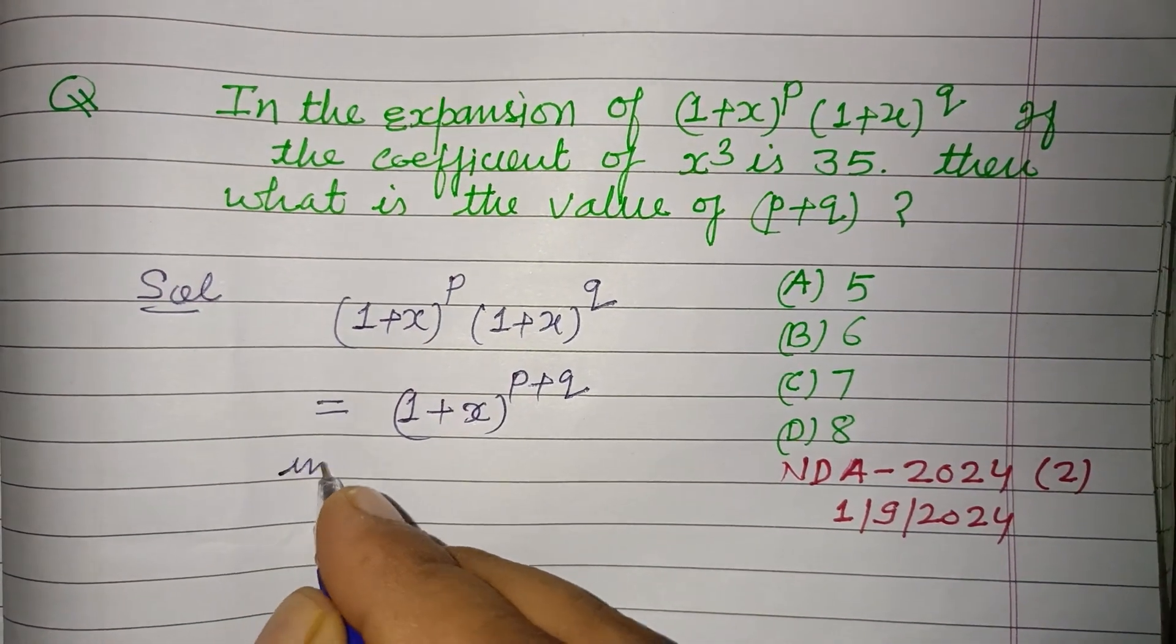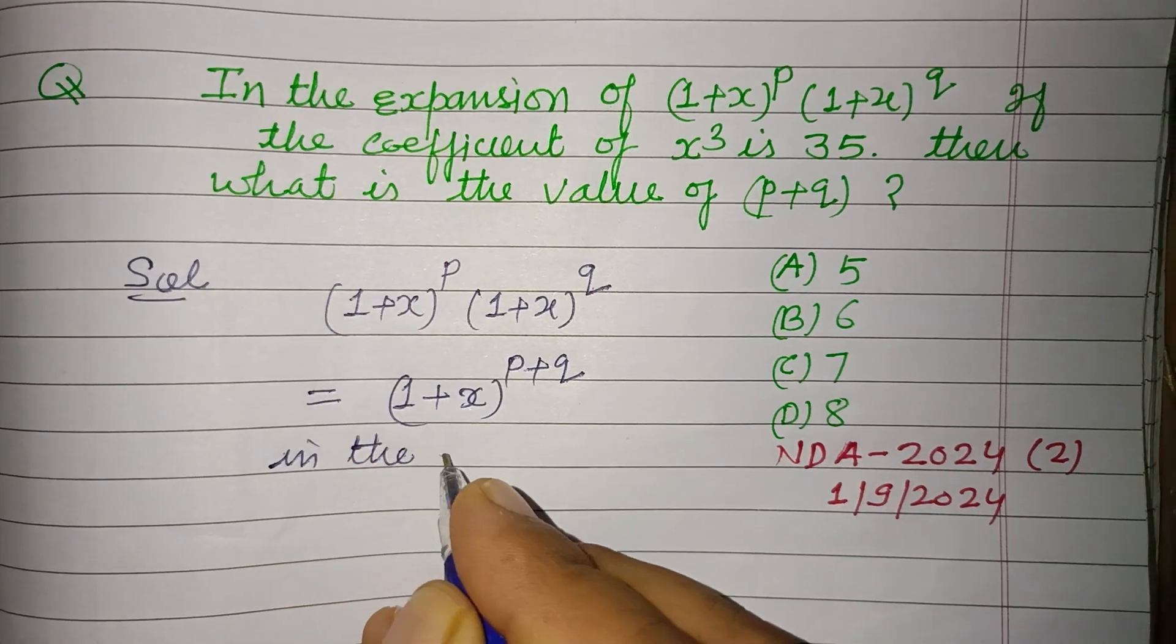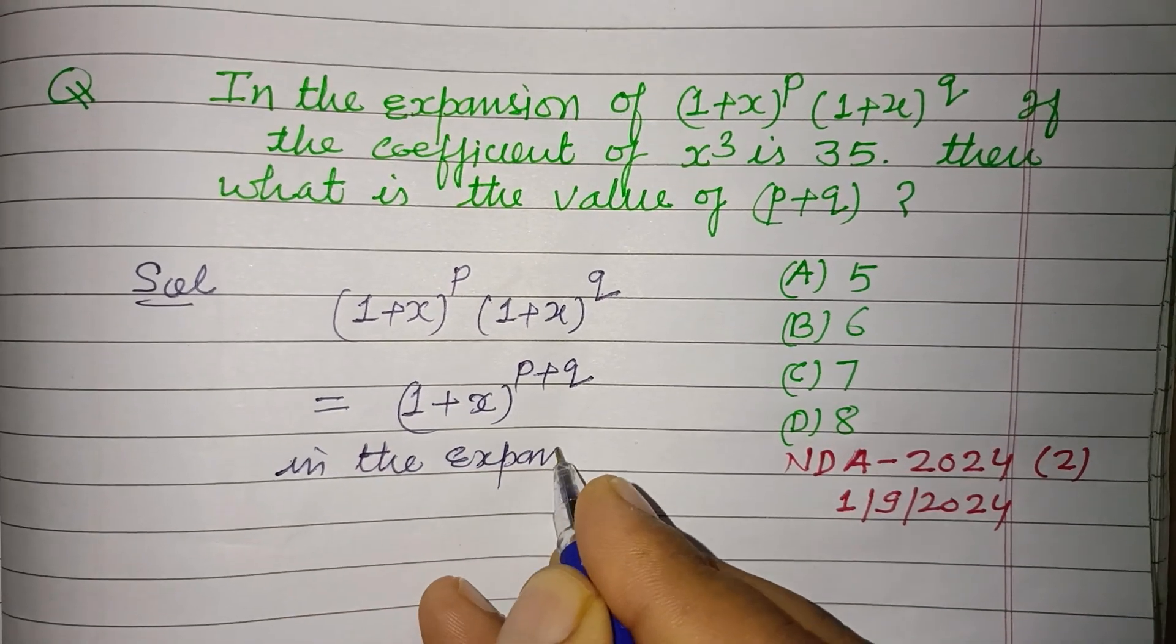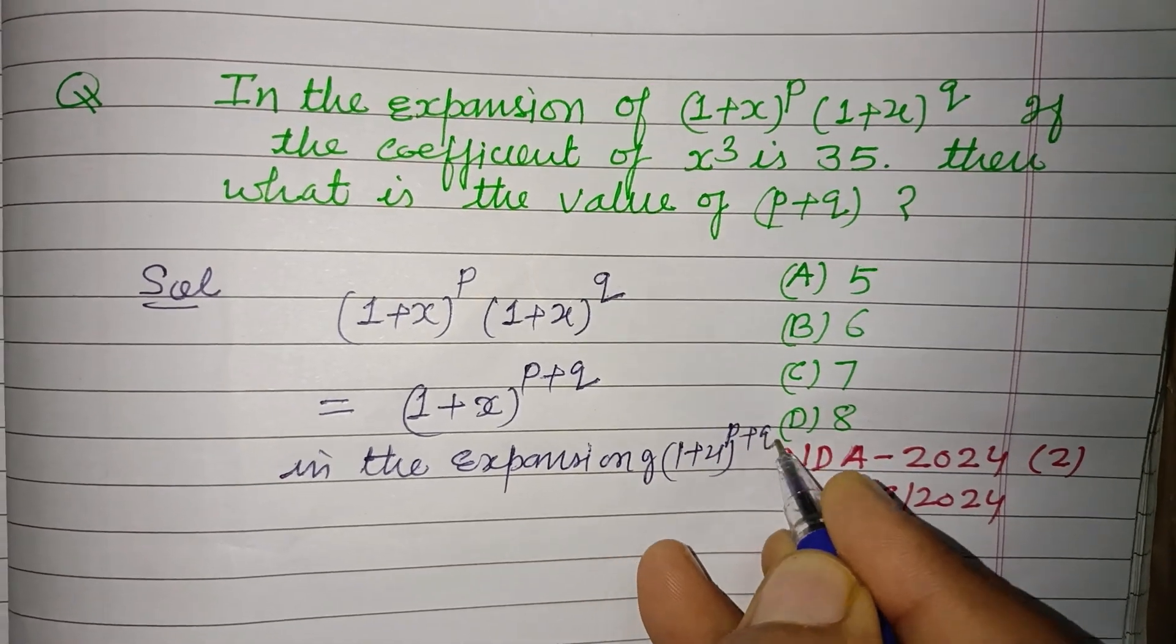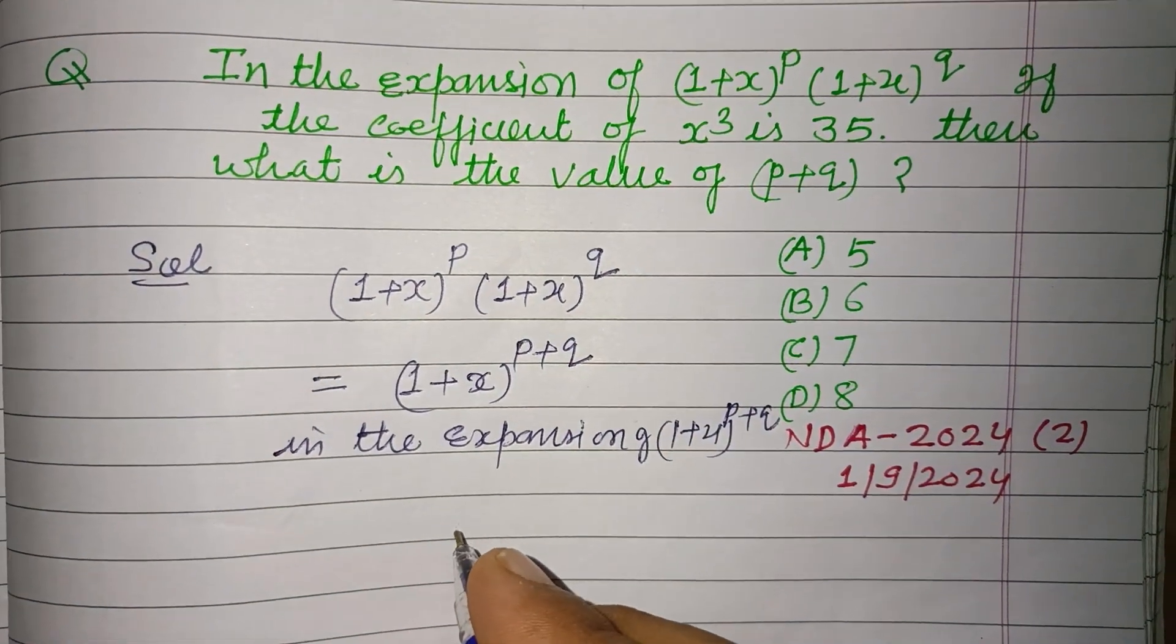In the expansion of (1+x) to the power (p+q), we can get x³ in the third term.